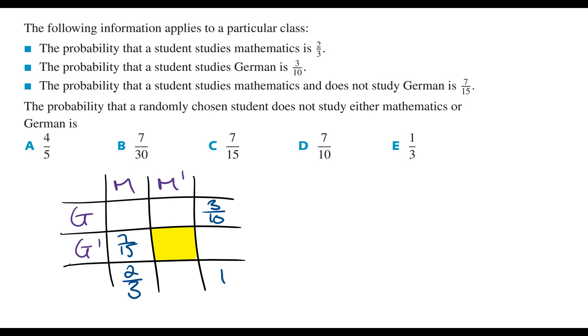From here we can see that the last column has to add up to 1. And so if we subtract 3 on 10 from 1, which is the same as 10 on 10, we're going to get 7 on 10 for this box.